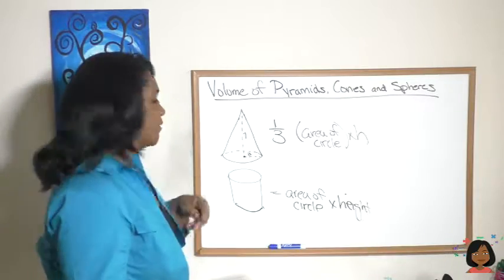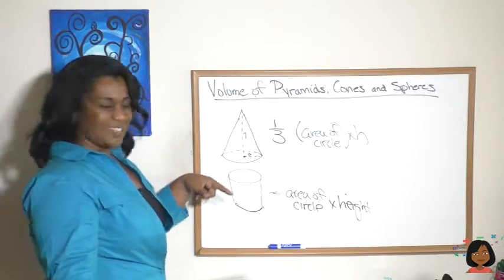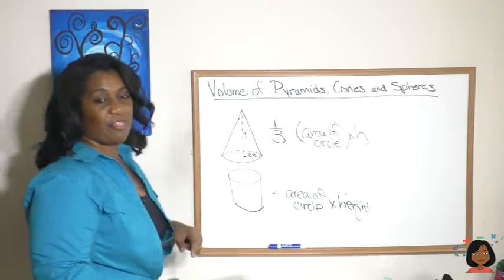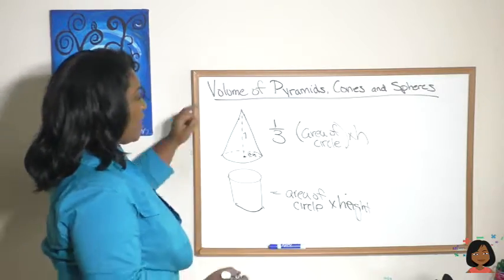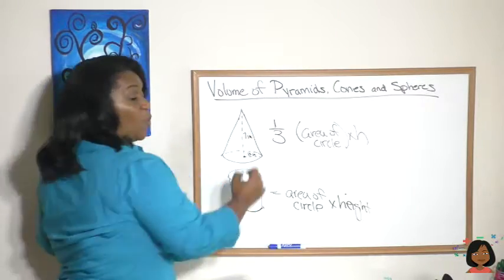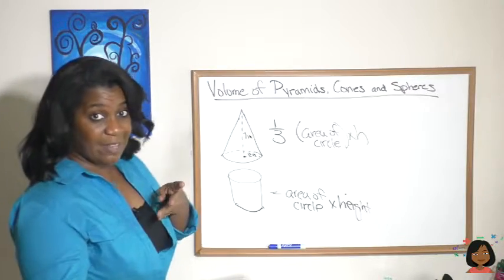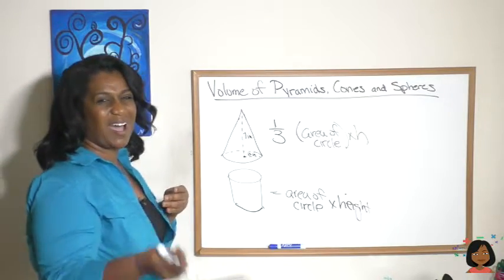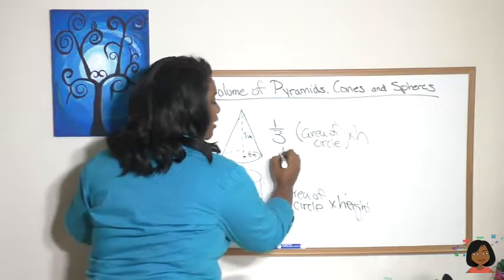So let me give you some dimensions so we can figure it out. Let's say we have a cone, three inches is our radius and our height is seven inches. What would we do? Well, the area of a circle, do you remember that? Area of a circle is π r².